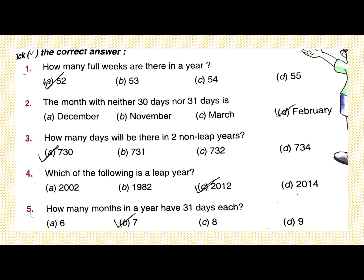Question number 3: how many days will there be in two non-leap years? In two non-leap years, there are 365 days in one year, so 365 multiplied by 2 equals 730 days. Option A is correct.